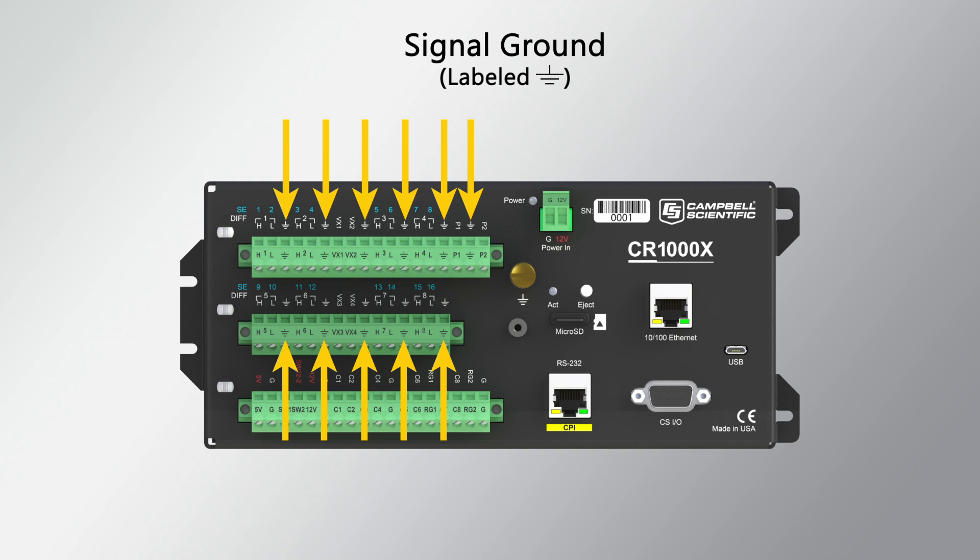Signal grounds are all connected inside the wiring panel, but best practice is to use the signal ground that is closest to the analog input channel where the measurement is being made, or to the voltage excitation channel if making a bridge measurement.